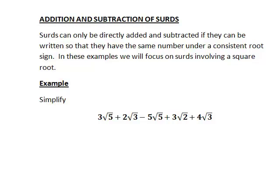Let's suppose for example that we wanted to simplify 3√5 + 2√3 - 5√5 + 3√2 + 4√3. Let's start by grouping these so that all of the ones with the same root sign appear one term after another.